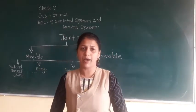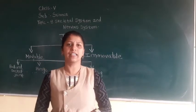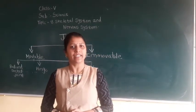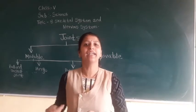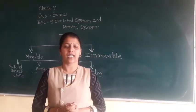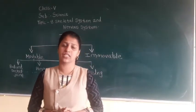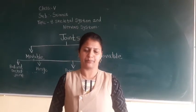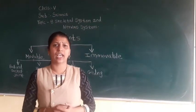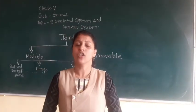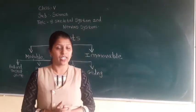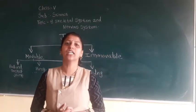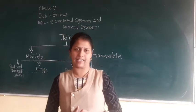The last main part we have learnt about is the limbs — forelimbs and hindlimbs. The bones are present in our arms and legs. The femur is the longest bone in our body, which is present in the leg.